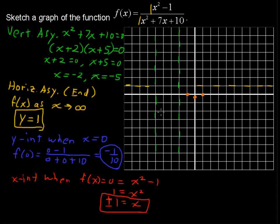You could start testing some points. What happens when x is negative 6? Is it above this vertical asymptote or below it? Well, when x is negative 6, it's going to be above 1, so it's going to go up like this.